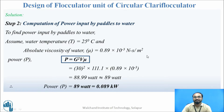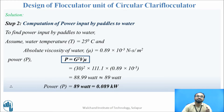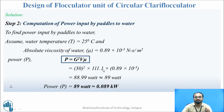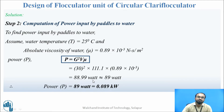Now let us calculate the power. The formula is P = G² × V × μ. We need μ, the dynamic viscosity of water. At 25°C, μ = 0.89 × 10⁻³ N·s/m². So power P = 30² × 111.1 × 0.89 × 10⁻³ = 88.99 watts, or approximately 0.089 kilowatts.